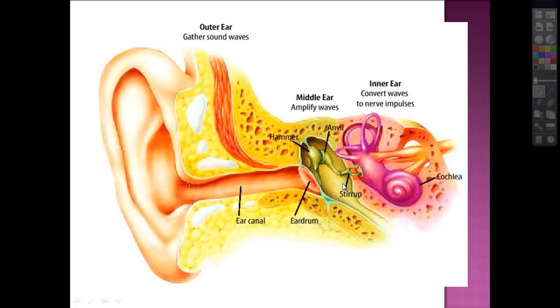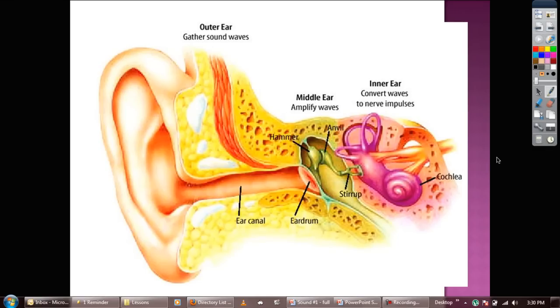Apparently whoever named these was also a blacksmith. And the hammer, anvil, and stirrup, they make up the middle ear, which amplifies the waves. And then it goes into the inner ear, which converts waves to nerve pulses. It kind of looks like a squid via cochlea, you know, like a conch shell or something. And that transforms the sound waves into nerves so we can hear stuff.